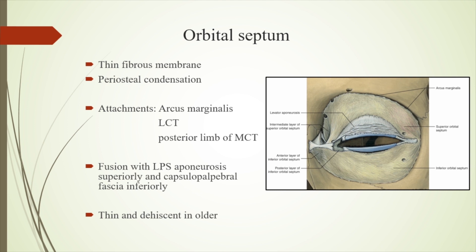The pre-orbital septum is a thin fibrous membrane — a periosteal condensation. It attaches around the orbital margins to the arcus marginalis, the lateral canthal tendon, and the posterior limb of the medial canthal tendon. It fuses with the LPS aponeurosis superiorly and the capsulopalpebral fascia inferiorly. In the elderly, it is thin and dehiscent. One important point: whenever we are suturing the eyelid, we should not include the orbital septum between the sutures, as it will cause lagophthalmos.